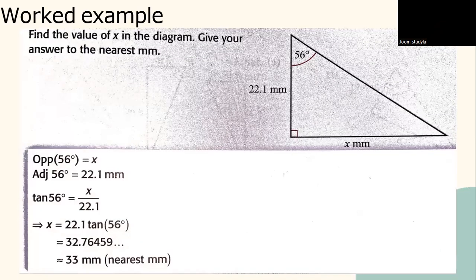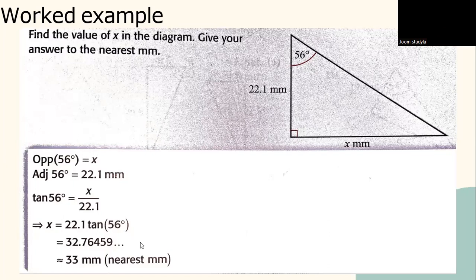The next question asks you to find the value of x, which is the opposite side in the diagram, and give the answer to the nearest mm. Opposite 56° = x, and adjacent 56° = 22.1 mm. So tan 56° = x / 22.1, meaning x = 22.1 × tan 56°. The answer is approximately 32.76, so rounded to the nearest mm, x = 33 mm.